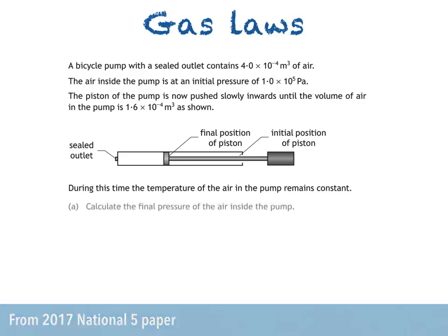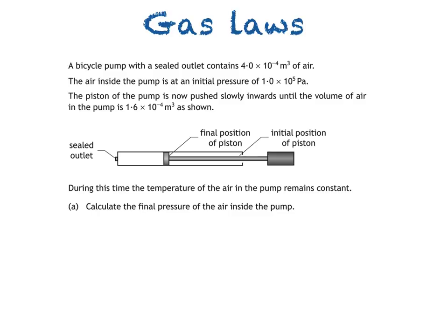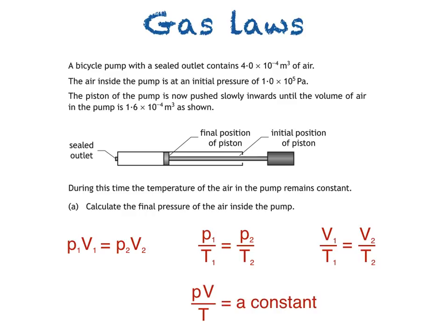Part A asks us to calculate the final pressure of the air inside the pump. There are four gas laws to choose from in the relationship sheet. This one links pressure and volume at constant temperature. The second one links pressure and temperature at constant volume. The third links volume and temperature at constant pressure. And the last, known as the general gas equation, is to be used when all three quantities are changing.